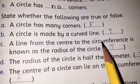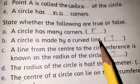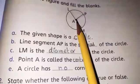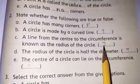A line from the center to the circumference is known as the radius of the circle. The line from the center of the circle to the circumference is called radius. It is true.